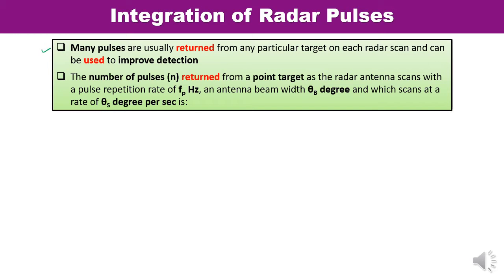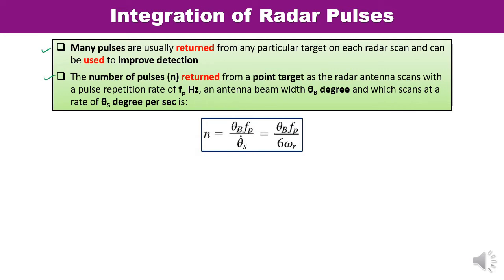We must be able to calculate the total number of pulses returned from a particular point target. If N is the total number of pulses returned from a point target, we can calculate it using the formula: N equals theta-b times fp divided by theta-s. Theta-b is the antenna beamwidth, fp is the pulse repetition rate in hertz, and theta-s is the antenna scanning rate in degrees per second.